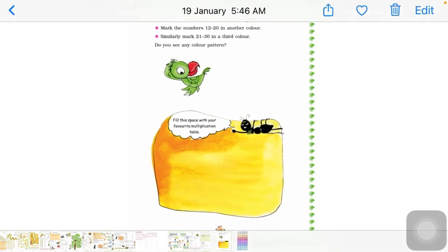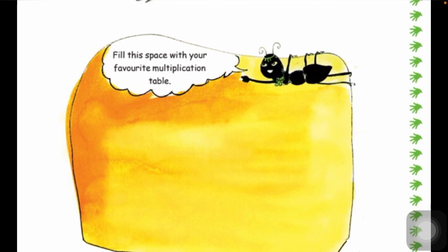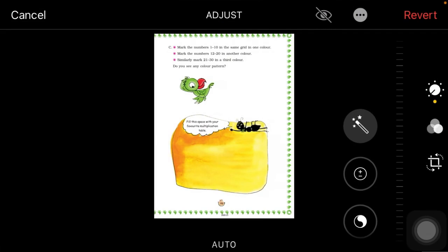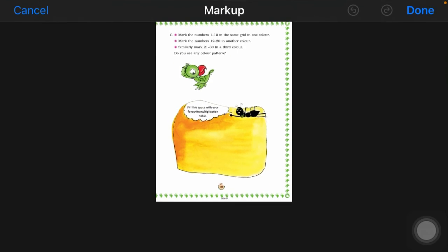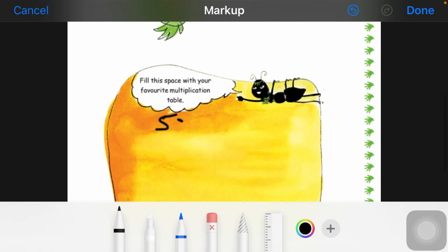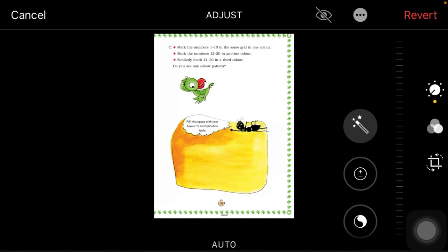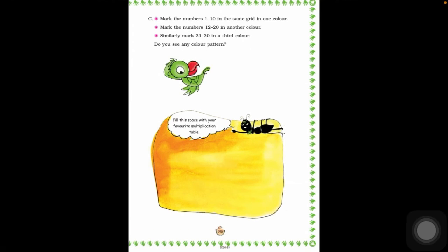In the last page you have to write the table. Like my favorite is five table, so I have written here. Five ones are five, five twos are ten, five threes are fifteen. In this way I have to fill up this whole table. So here you have to write a table which is your favorite. So now we are going to end.